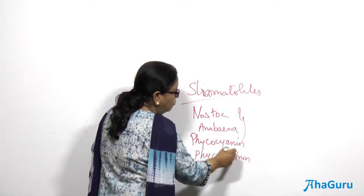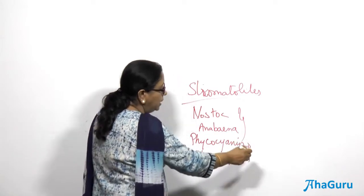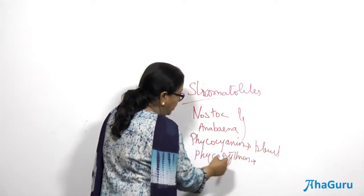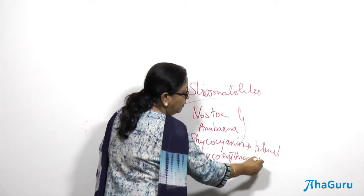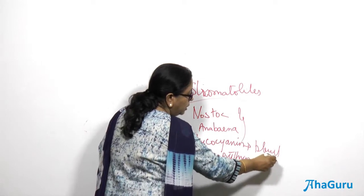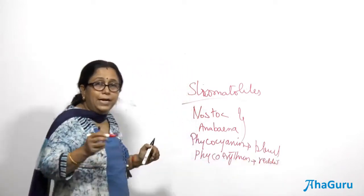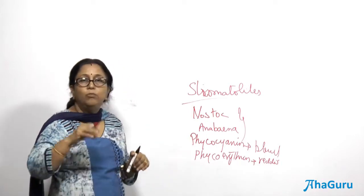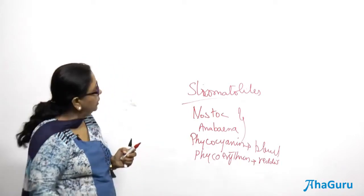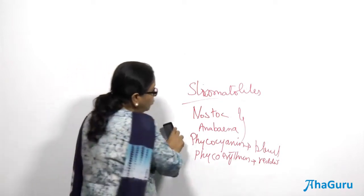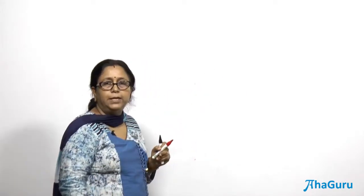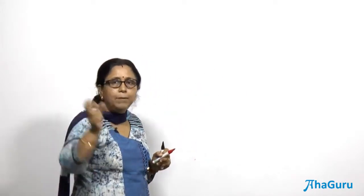Organisms with more phycocyanin appear bluish in color. Some with more phycoerythrin appear reddish — the Red Sea is called red because of cyanobacteria which have more phycoerythrin. These pigments are located on chromatophores, which are extensions of the cell membrane.